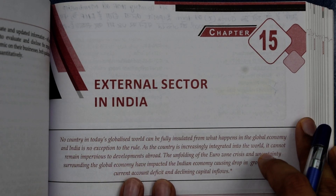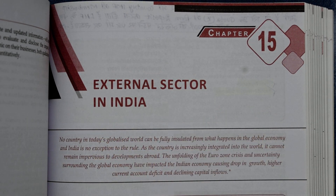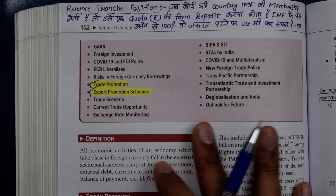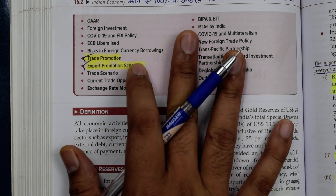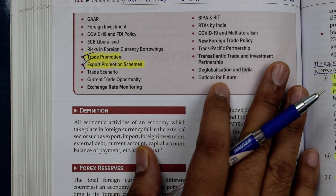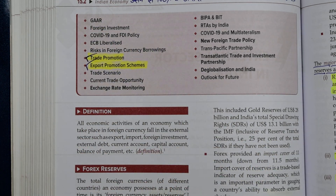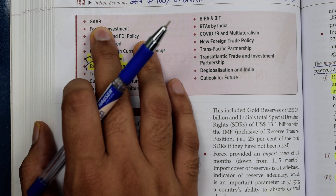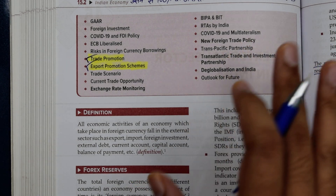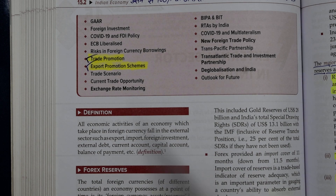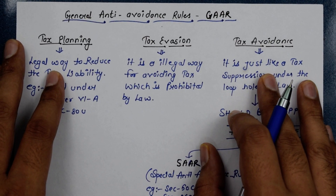Hey guys, welcome back to the channel. This is Shivam and you are watching Economics Easy. Today we are covering the topic of GAAR — the General Anti-Avoidance Rule. This topic is from our notes, as the coverage in the textbook was not very good. So we have made separate notes to complete the GAAR topic, and all the concepts will be clear from these notes.